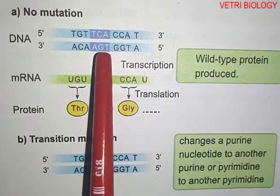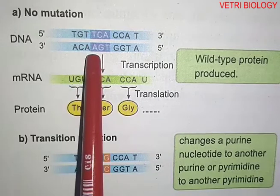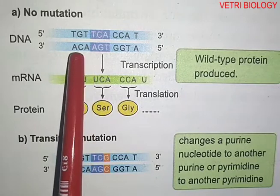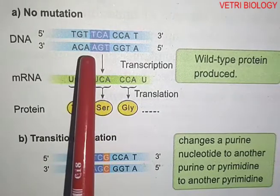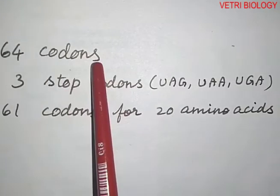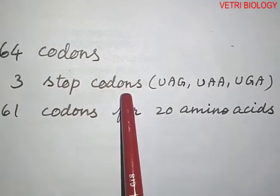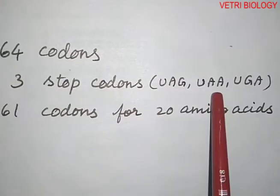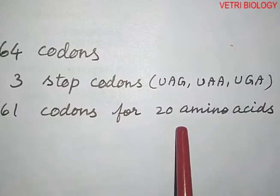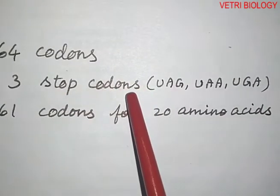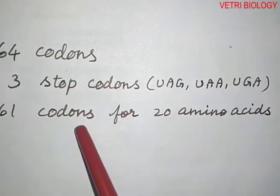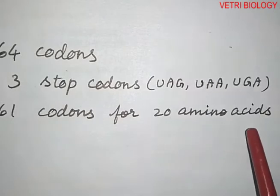To produce a specific protein, the information is read in triplets — that is, 3 nucleotides come together to form one codon. There are a total of 64 codons. Out of these, 3 are stop codons: UAG, UAA, and UGA. The remaining 61 codons code for 20 amino acids. These 3 stop codons terminate the protein synthesis process.